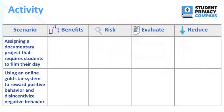To end this module, we'd like to provide this activity for you to go through on your own. These are two scenarios where you can talk about the benefits of why a teacher would want to pursue this, but then also go through the risk management process to help protect student privacy. The two scenarios are: assigning a documentary project that requires students to film their day, and using an online gold star system to reward positive behavior and disincentivize negative behavior. We've provided a guide key for how we thought about this activity in the resources. Thank you for joining this training.